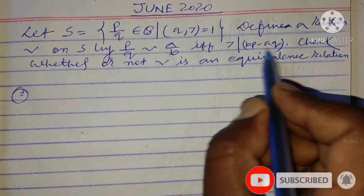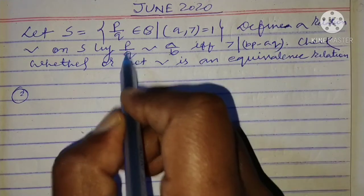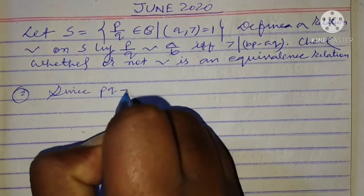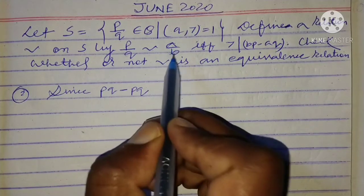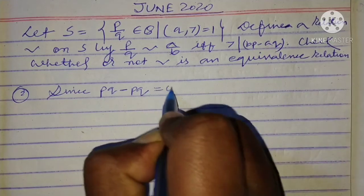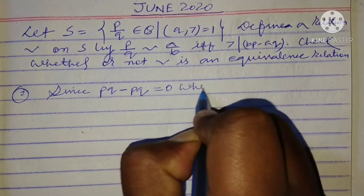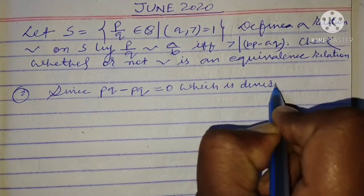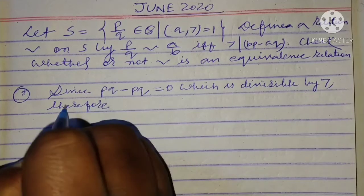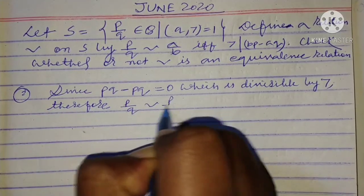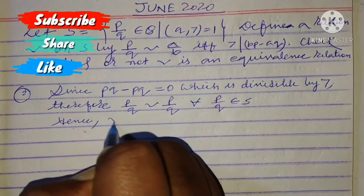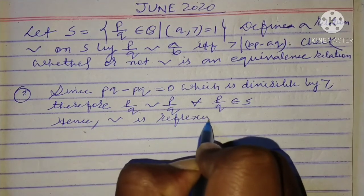For reflexivity: pp minus pp equals 0, which is divisible by 7. So we can say p/q is equivalent to p/q. Since p/q minus p/q equals 0 which is divisible by 7, therefore p/q is equivalent to p/q for all p/q belonging to S. Hence the relation is reflexive.